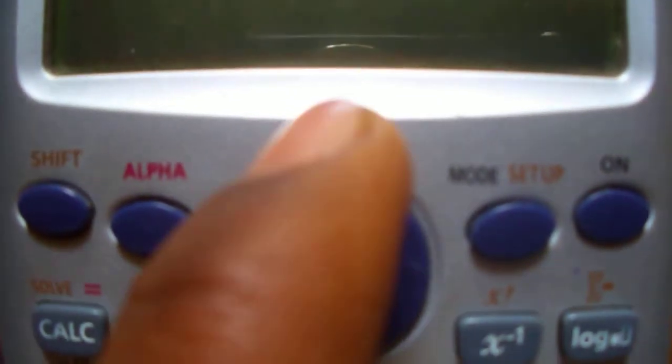Now press the upward arrow button. This button here. You should get Pol 0,1. R equal to 1. Theta equal to 90.